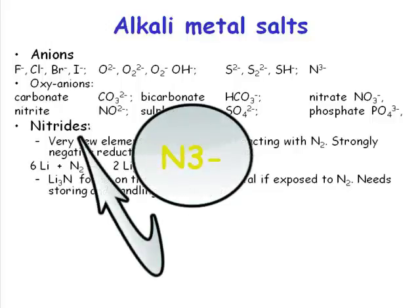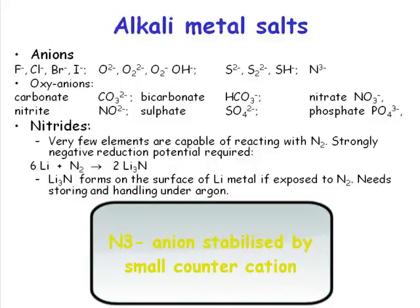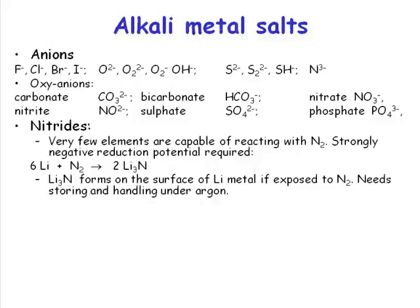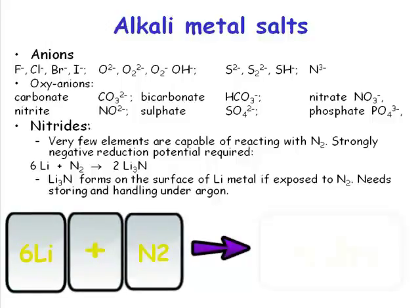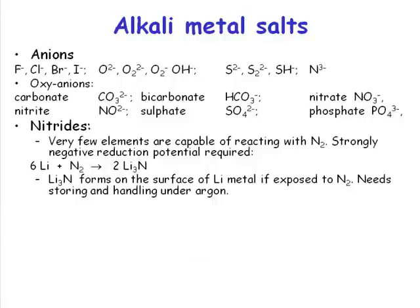Nitride is an N³⁻ anion. And the only way to stabilize an N³⁻ anion is if you're going to have a really quite small counter-cation to go with it — a very small, highly charged species. Now, lithium is very unusual. Lithium will react with dinitrogen, and this will happen in a nitrogen atmosphere. So if you exclude water vapor and oxygen, then lithium will react with nitrogen, and what it forms is lithium nitride. Lithium nitride is itself a black tarnish on the surface of the lithium metal, and it's quite unusual in doing this.